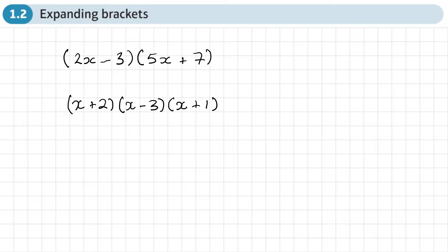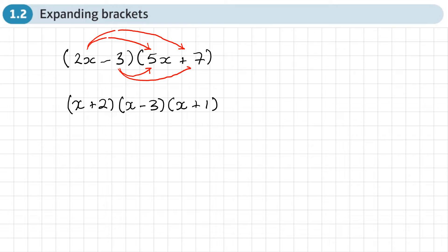When expanding two brackets it's possible to use a simple method where we just multiply using arrows — some people use a smiley face or arrange the arrows in a slightly different way, or even use a grid. But it's possible to do this without a grid.